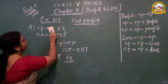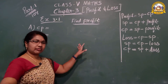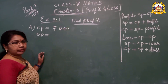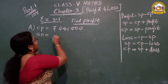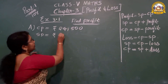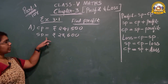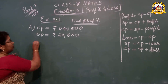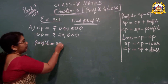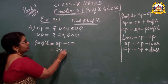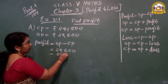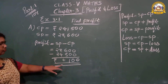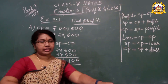Last question, question number 6: CP is written as rupees 24,500 and SP is written as rupees 28,600. The selling price is greater than the cost price, so there is profit. Write the formula: Profit is equal to Selling Price minus Cost Price. 28,600 minus 24,500. The answer: 4,100 rupees is the profit.